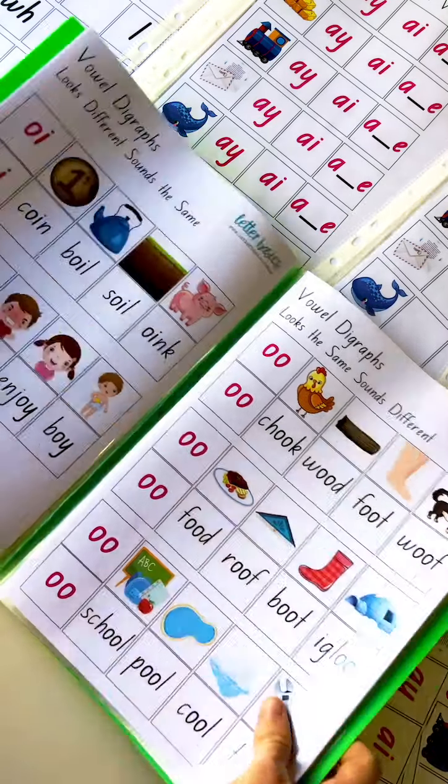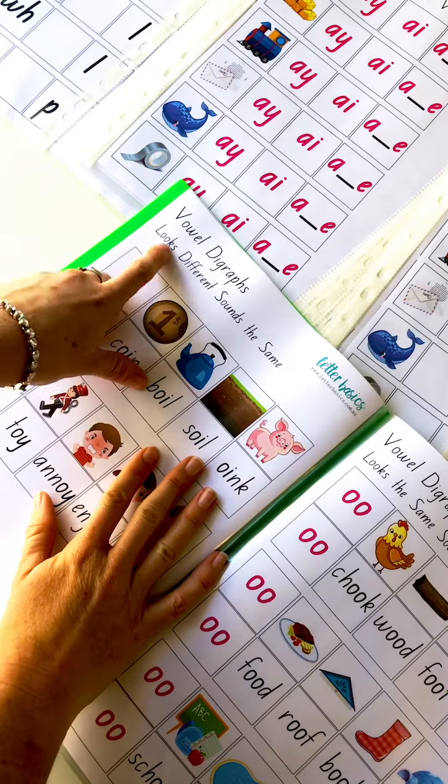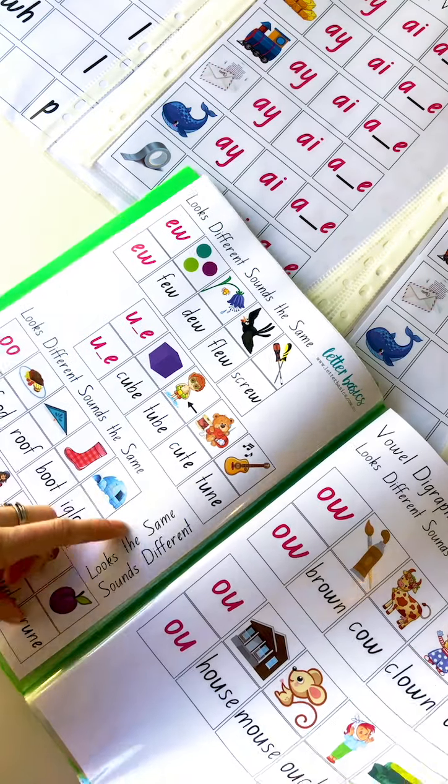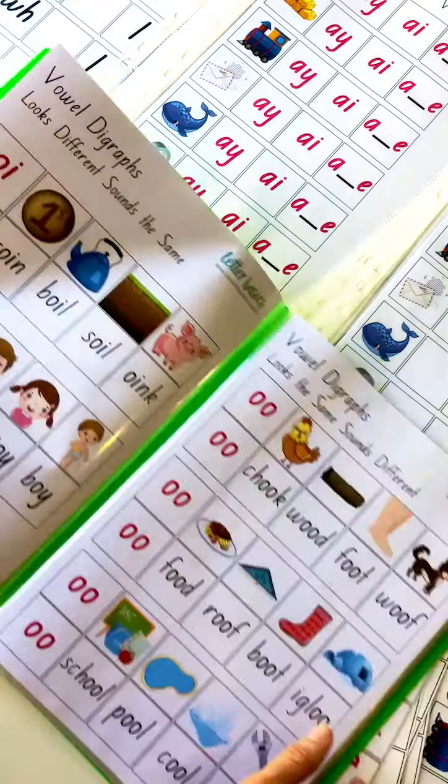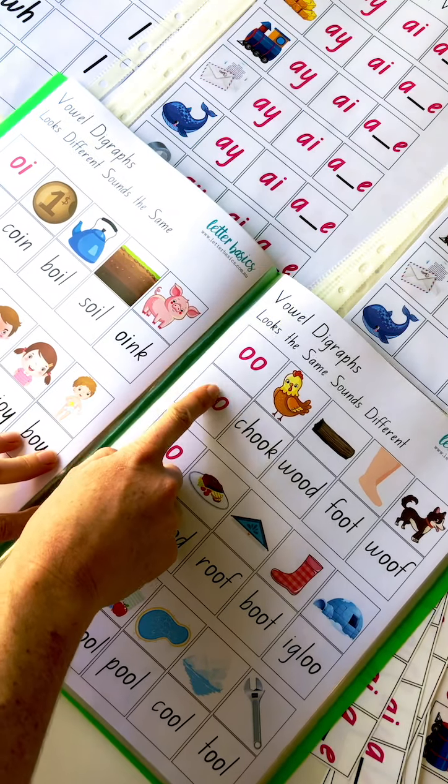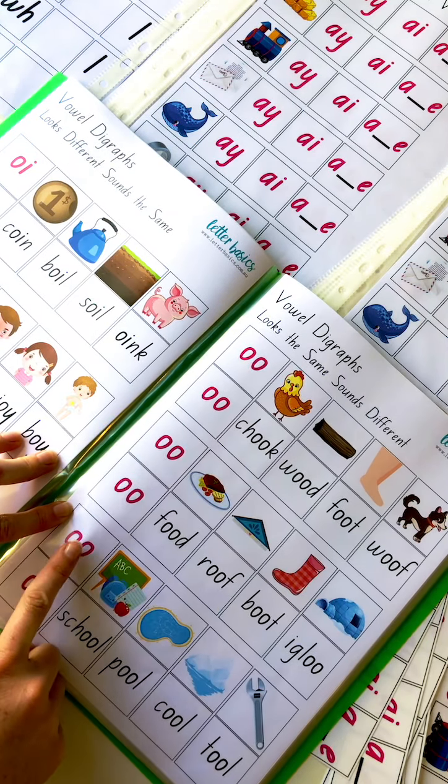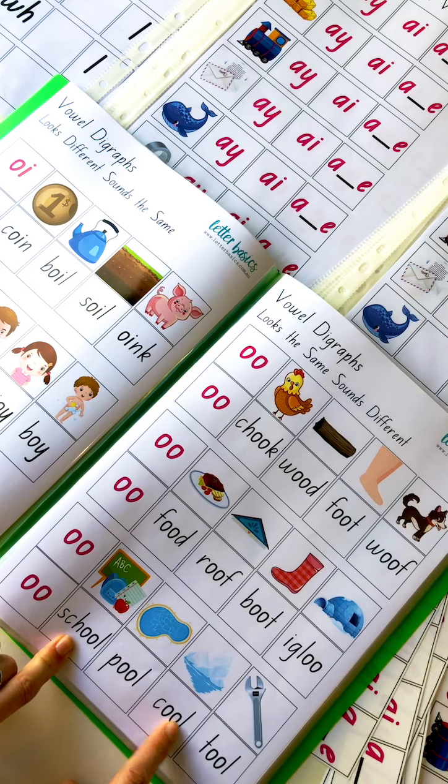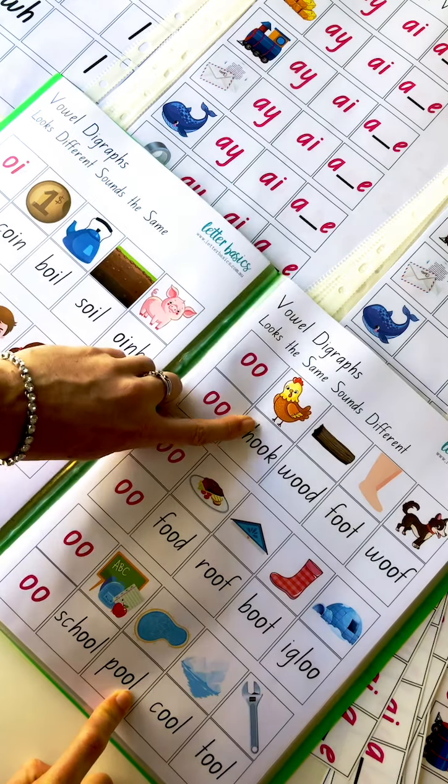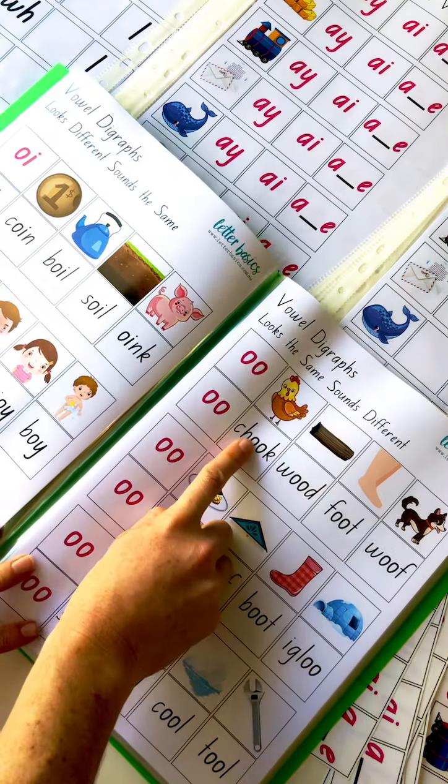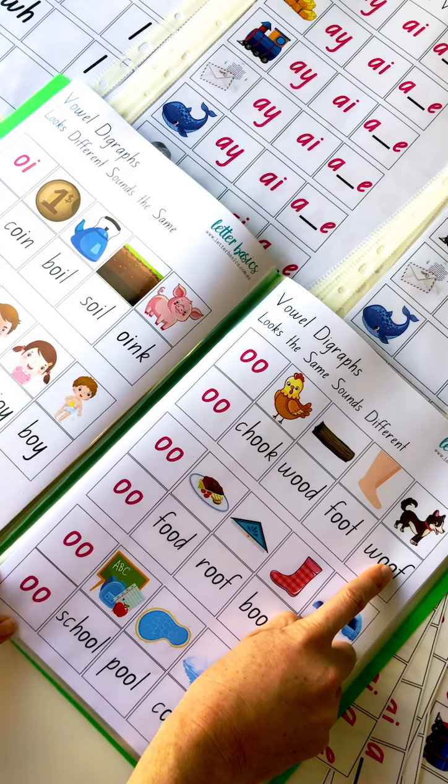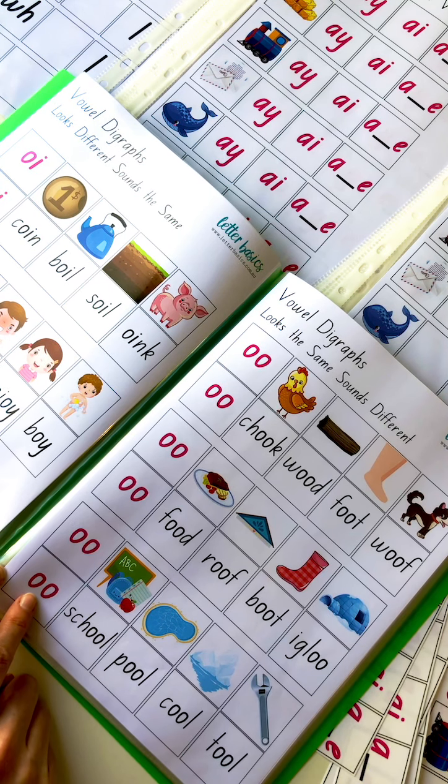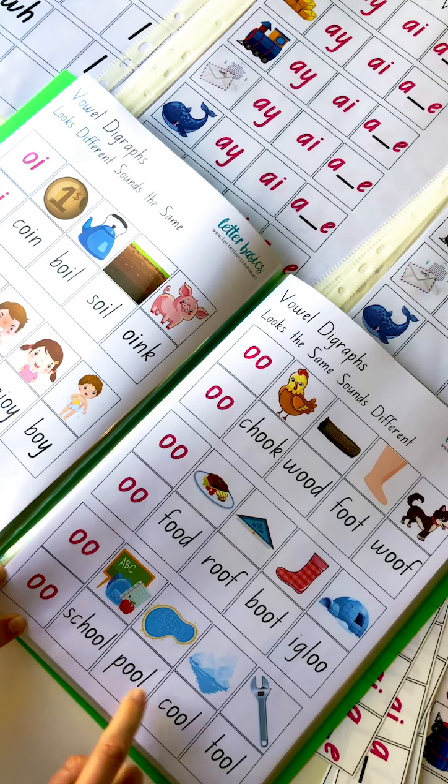So let me go back to the beginning. Up until here, it's been looks different, sounds the same, other than that exception there: looks the same, sounds different. So then we're going into looks the same, sounds different. So we've got our OO, OO, and OO. I didn't even know this was a separate sound. It occurs because there's an R at the end of this one, so it changes that sound. So we've got book, wood, foot, woof. OO for food, roof, boot, igloo. OO for school, pool, cool, and tool.